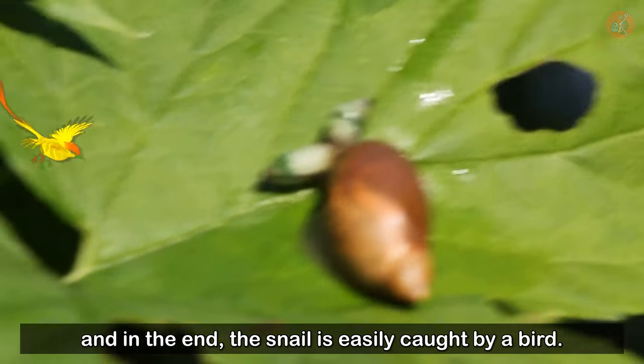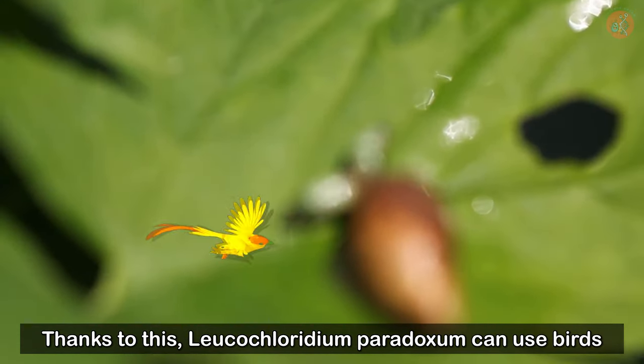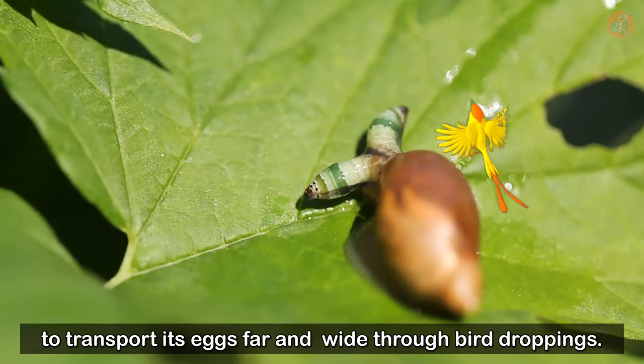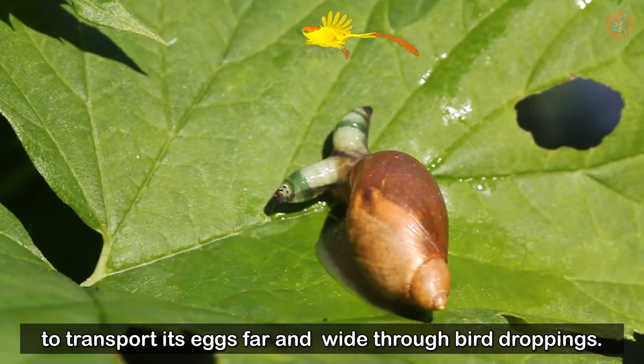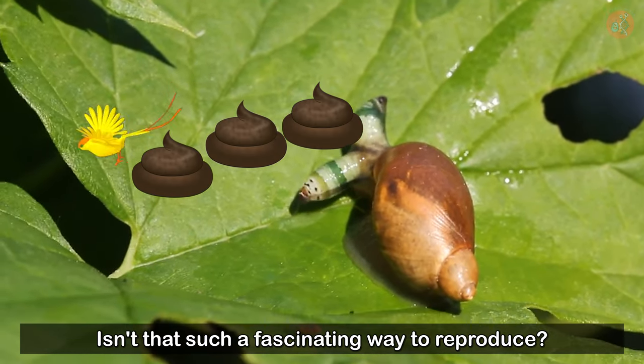And in the end, the snail is easily caught by a bird. Thanks to this, Leucochloridium can use birds to transport its eggs far and wide through bird droppings. Isn't that such a fascinating way to reproduce?